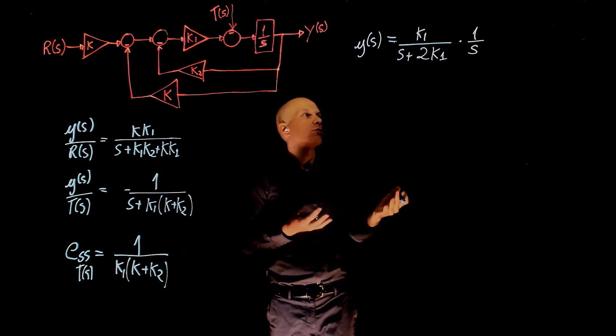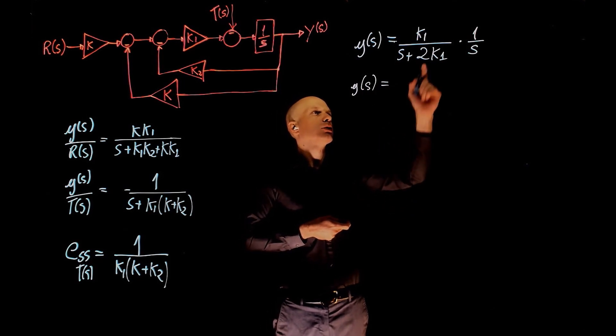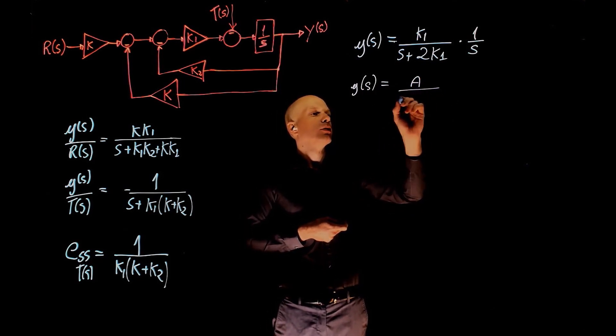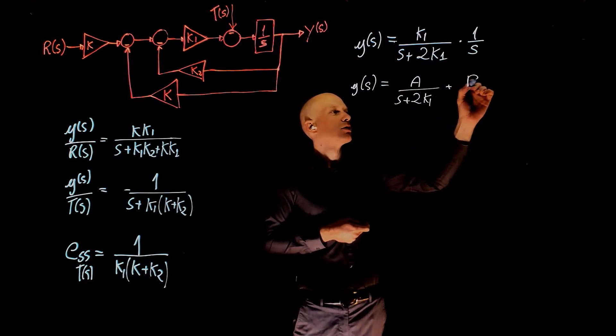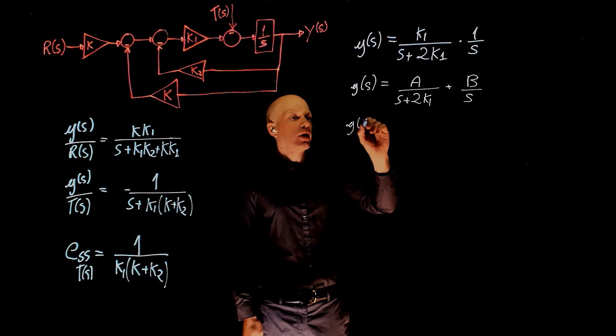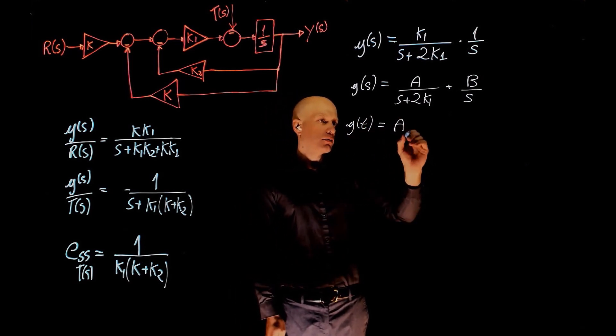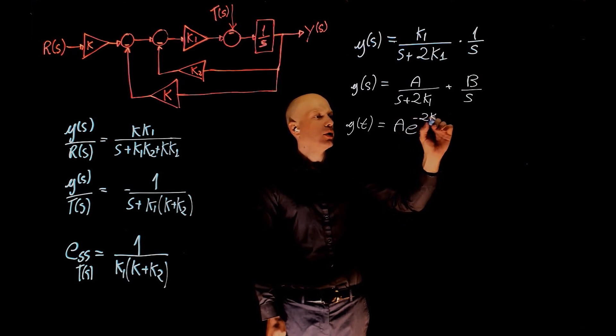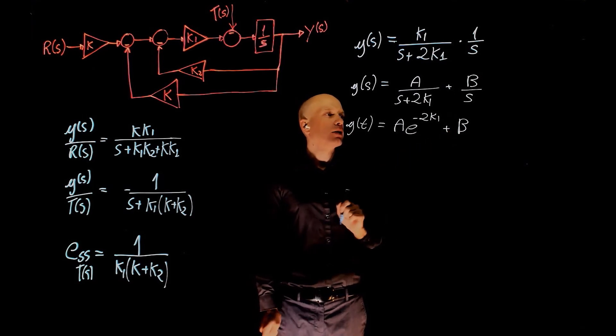Now here we need to find the inverse Laplace and we have to split this into partial fractions. So we can have a over s plus 2 k1 plus b over s. And y of t in this case will be a exponential of minus 2 k1 t plus b.